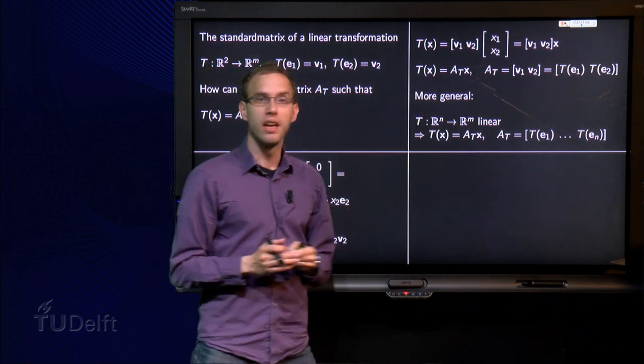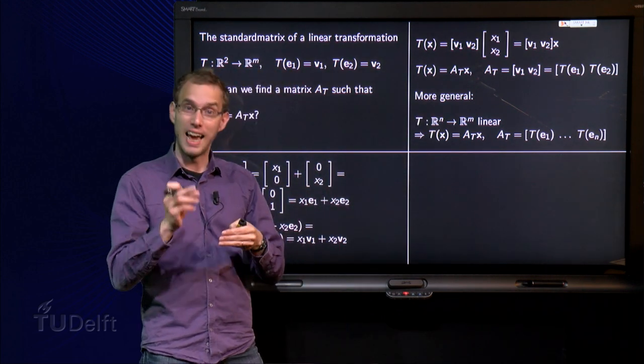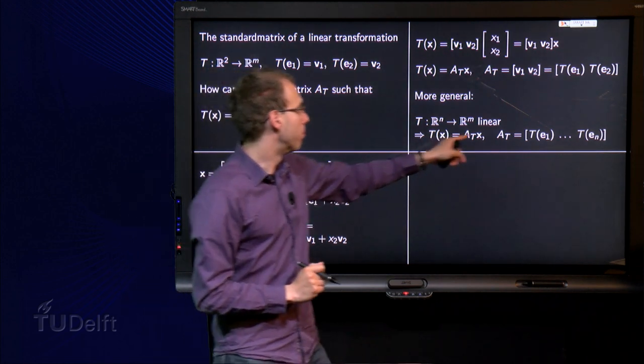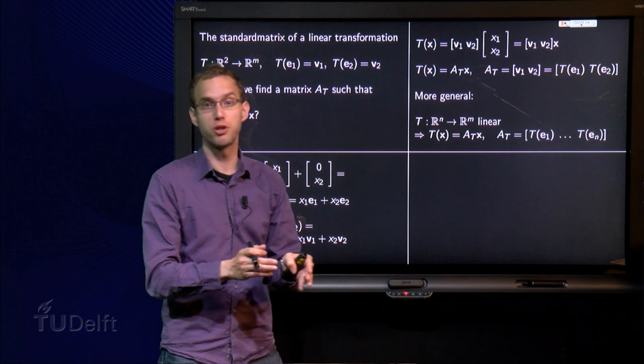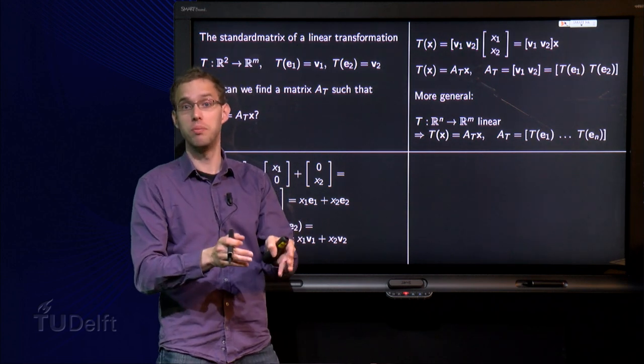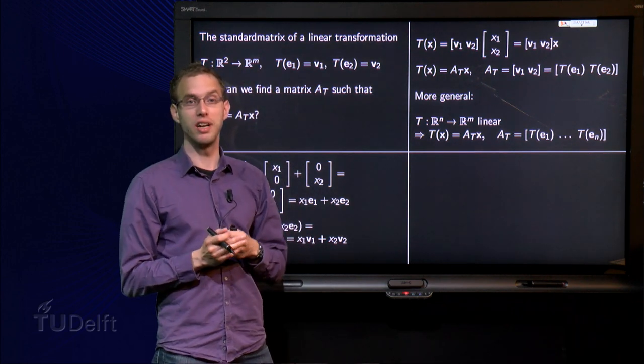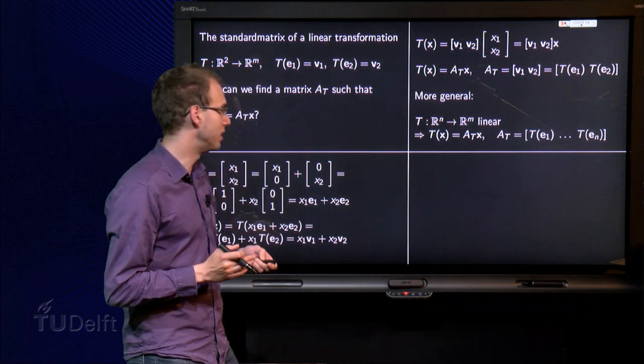Well more generally, if you have a transformation from Rn to Rm, you have E1 up till En. And you put T of E1 in the first column of A, T of E2 in the second column, up till T of En in the last column. And that's how you find your AT, your matrix of the transformation T.